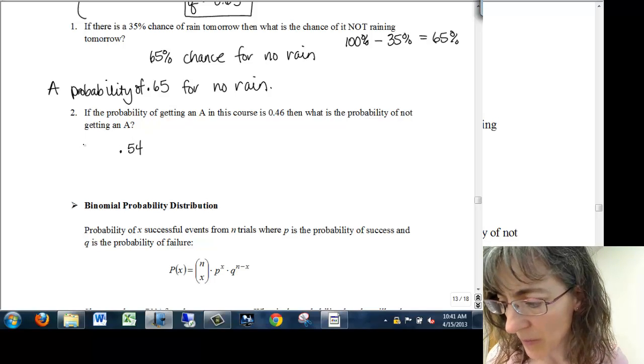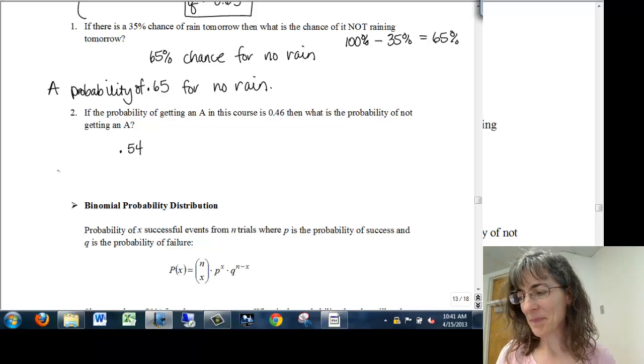Point five four chance of you being paid. Point five four is the chance of you being paid. It's a probability.